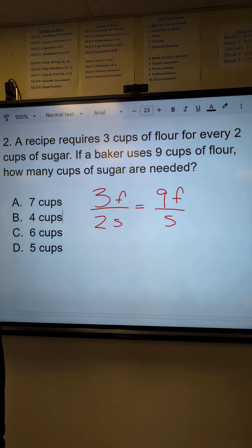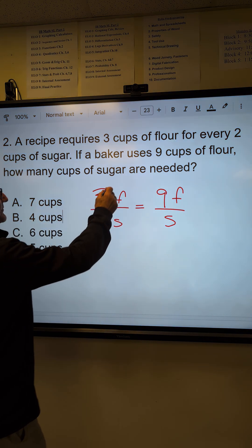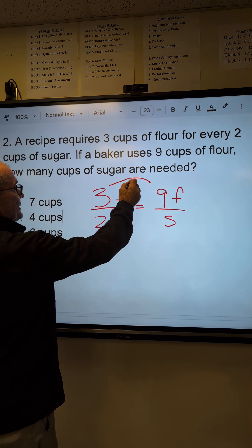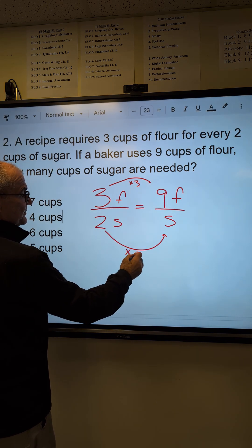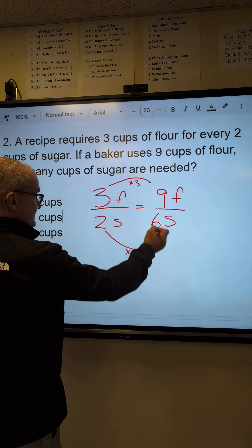One ratio equal to another proportion. I could say, how do I get from here to here? Well, I multiply by three. How do I get from here to here? I also multiply by three, giving me six cups of sugar.